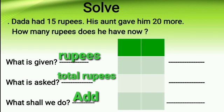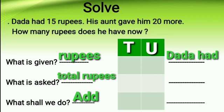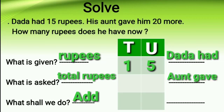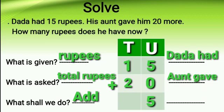First we will name the columns. This is our tens column and this one is our units column. Dada had 15 rupees, so we will put 1 in the tens column and 5 in the units column. Aunt gave him 20 rupees, so we will put 2 in the tens column and 0 in the units column. Now let us add: 5 units plus 0 units is equal to 5 units. 1 ten plus 2 tens is equal to 3 tens. So we have 35 as the total rupees.